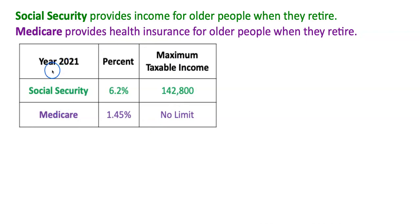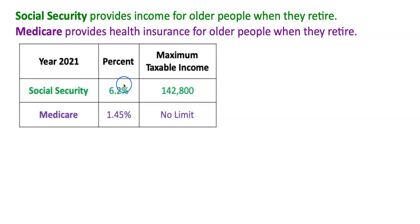Now let's go down to this chart. This is for the year 2021. It says that for Social Security, the rate taken out of your paycheck is 6.2 percent — that means for every hundred dollars you make, six dollars and 20 cents will be taken out. Your employer also has to pay this amount, but we're just going to focus on the employee. I'll go over the maximum taxable income of $142,800 later in the video.